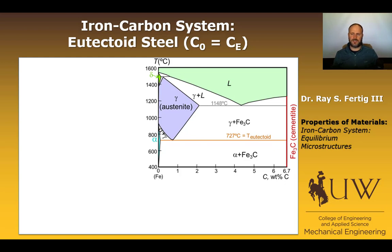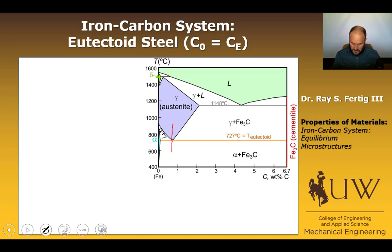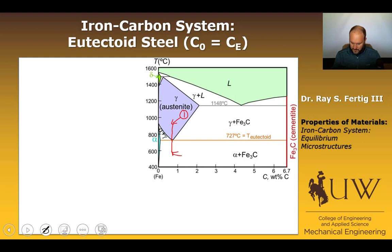Let's start with the eutectoid composition, where the system composition is the same as the eutectoid composition — in this case, 0.76 weight percent carbon. We're going to begin in the gamma or austenite phase and cool through the eutectoid reaction, then form the eutectoid microstructure below that. We'll call the starting point point 1, and the point below the eutectoid temperature of 727 degrees C point 2.